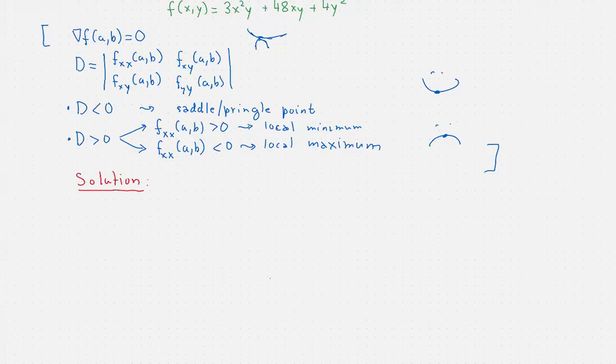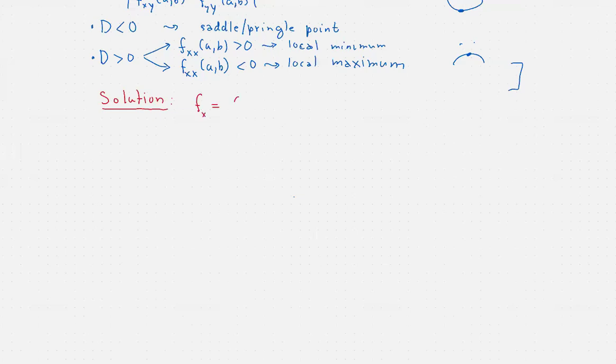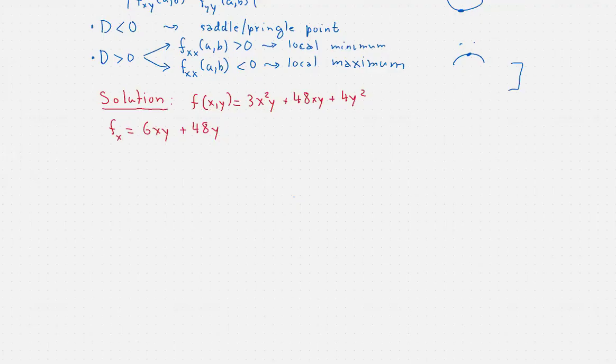First, let's find the derivatives. The derivative with respect to x is 6xy. Actually, maybe I should write the function once more so that it's visible here. The function is 3x²y plus 48xy plus 4y². And f_x equals 6xy plus 48y.